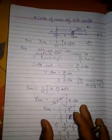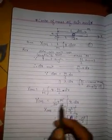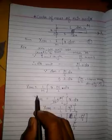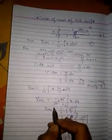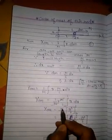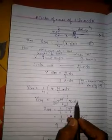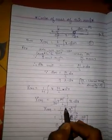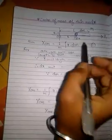Here m by l are constants, so we will take them out from the integration. Now the center of mass in the x coordinate is equal to 1 by m into m by l, times the integration of x dx. And the integration should be from 0 to l as it has length 0 to l.